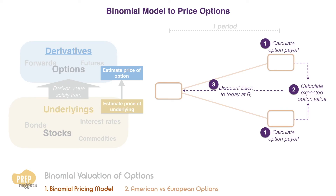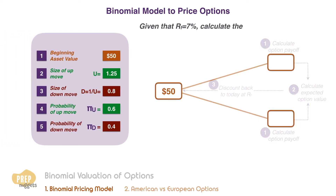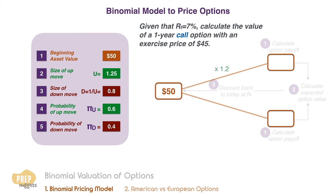Let's illustrate this by going back to our earlier example. Given that the risk-free rate is 7%, calculate the value of a one-year call option with an exercise price of $45. We've earlier calculated the expected prices one year from now in the event of an up and down move.